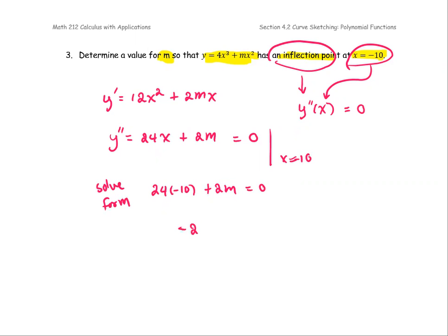We get negative 240 plus 2 times m equals zero, or 2m equals 240. Divide both sides by 2, we get m equals 120 as a result.